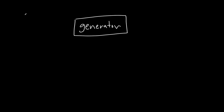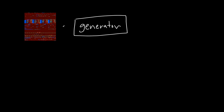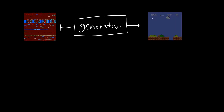The input to the generator is the Nintendo's RAM — its memory. The desired output is the corresponding image on the Nintendo screen. And the generator is also being trained to fool the discriminator.